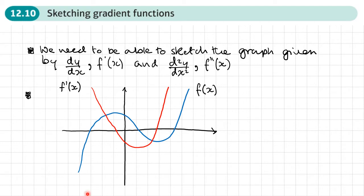Here's an example. The blue line is a graph of a function — this looks like a cubic. The red line represents the graph of the derivative. If this is a cubic, we'd expect this to be a quadratic once we differentiate it. Let's look at the points where the gradient is zero. The gradient is zero here, and notice that the red derivative graph has a value of zero at those points.